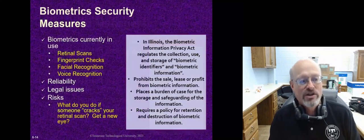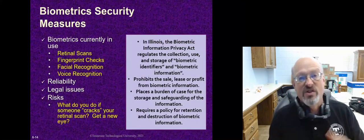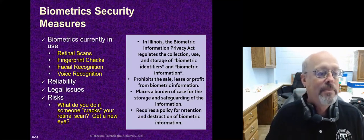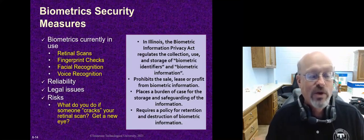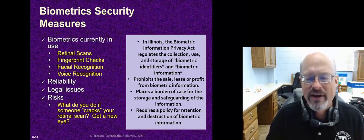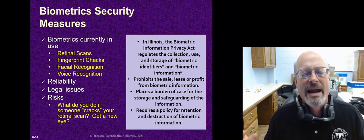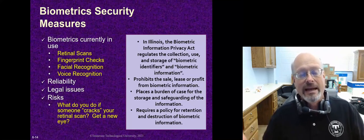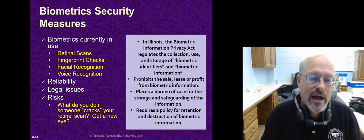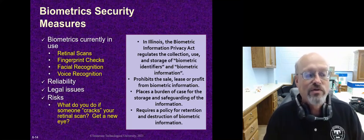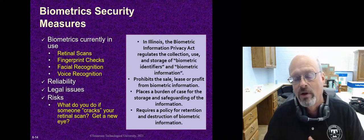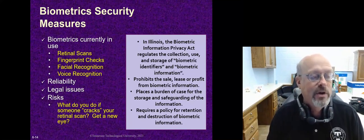Voice recognition, facial recognition, fingerprints, and retinal scans are all very popular biometrics that can be used. They're pretty reliable generally speaking. What these systems do is take the image of your face, fingerprint, or an impression of your voice and convert it to a digital code. That digital code must be kept secure, because if somebody gets that digital code, they can bypass the biometric tools.